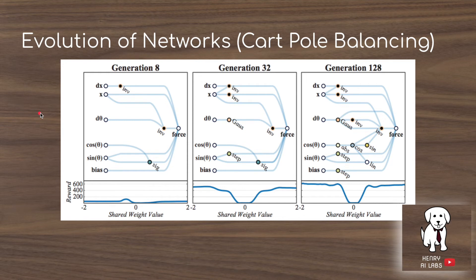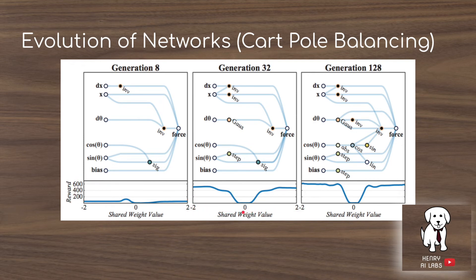This slide shows the evolution of the weight agnostic neural network on the cart pole balancing task. By generation 8, the connections and topology of the network are basically random with respect to the input. By generation 32, the network learns to associate the position of the cart with the velocity of the cart. By generation 128, it learns a much more advanced way of weighing all the different inputs to control the force of the cart. The plots also show performance with respect to different shared weight values — when the shared weight is zero, no information passes through the network at all, and performance appears better at the far ends of the weight spectrum.